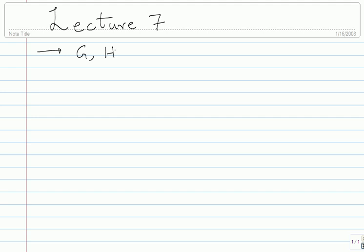You should be able to go back and forth from one to the other using systematic reduction. The next thing you should be very comfortable with is the quantity D, the minimum distance. You should know its definition clearly for linear codes. The relationship between D and H is crucial — it is what is usually used in practice and design. The connection is the minimum number of linearly dependent columns of H, which you should contrast with the rank, a completely different entity.